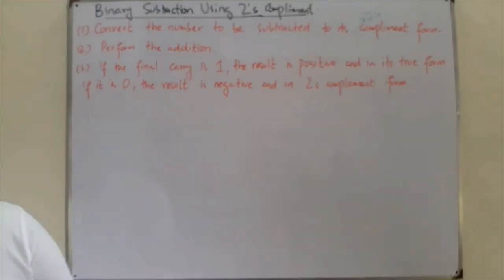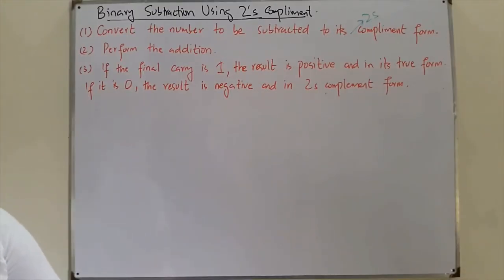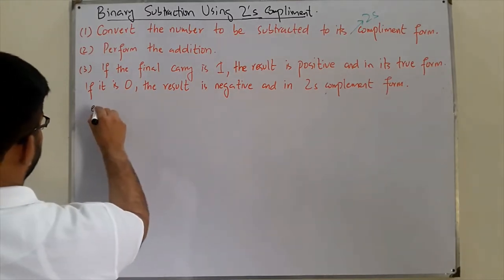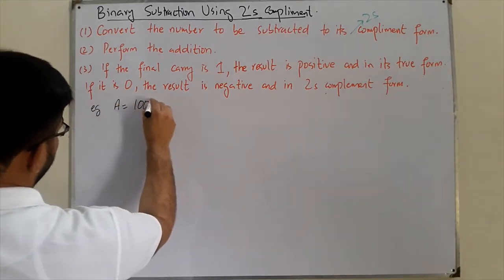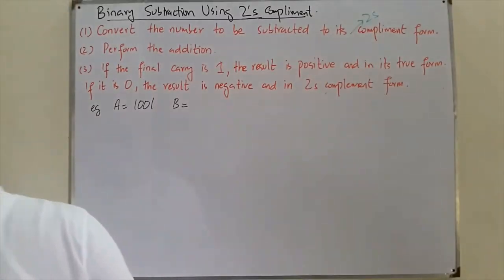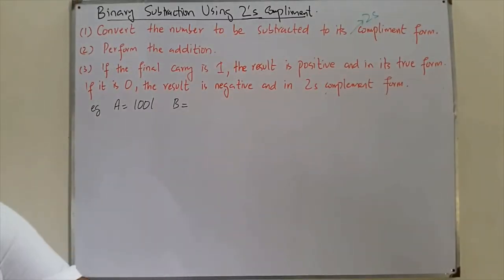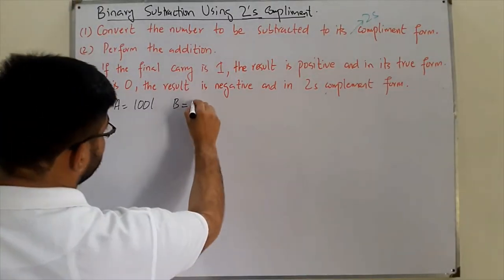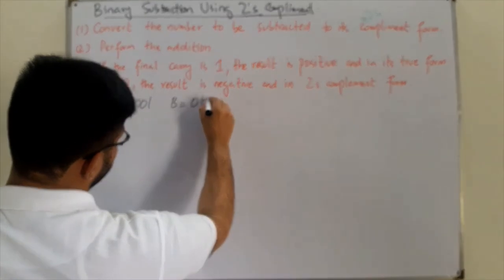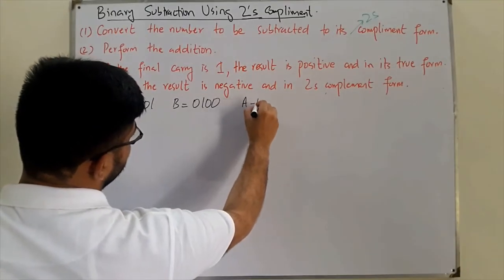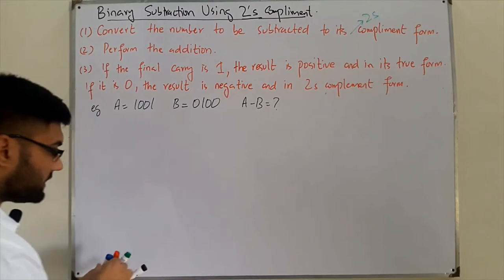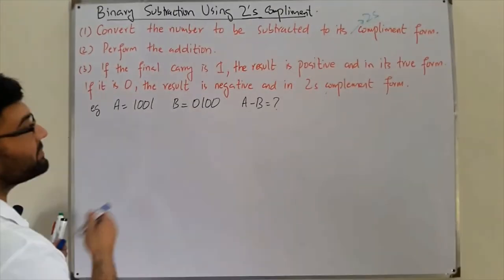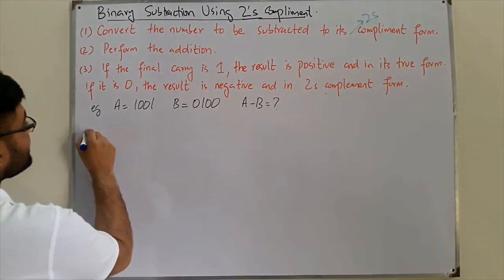Let's work through an example. A is 1001 and B is 0100, and we need to find A minus B. So we first find the two's complement of B.